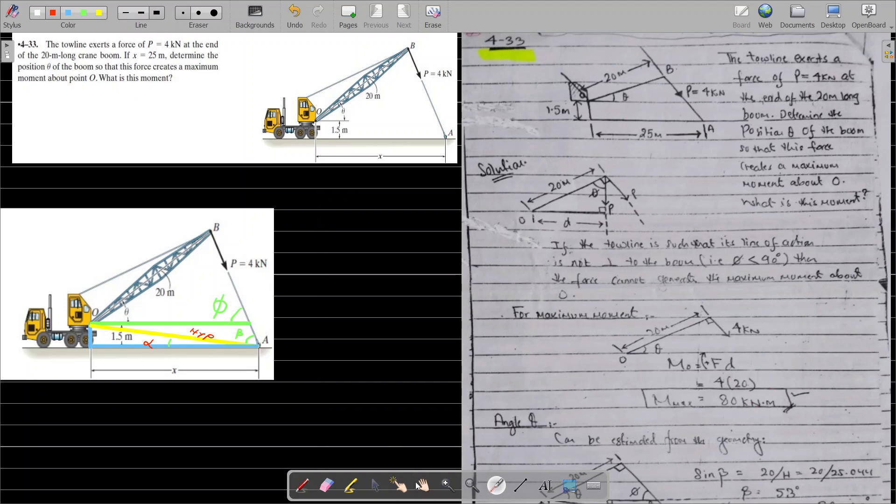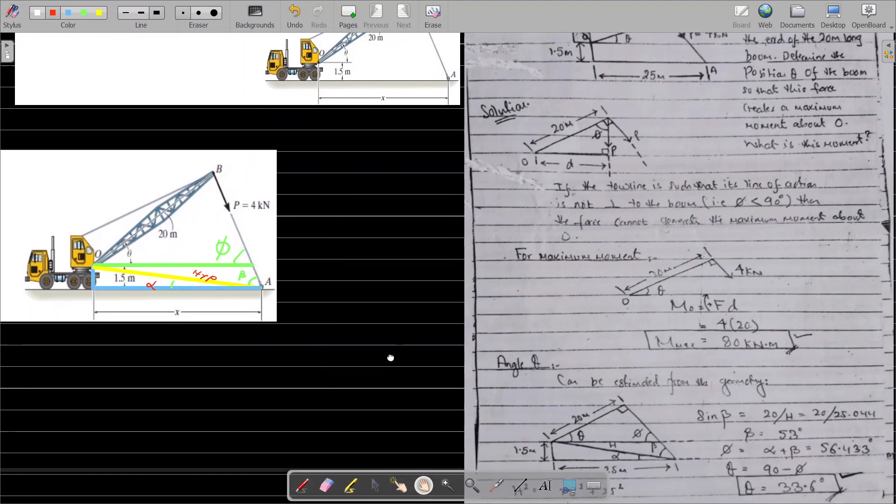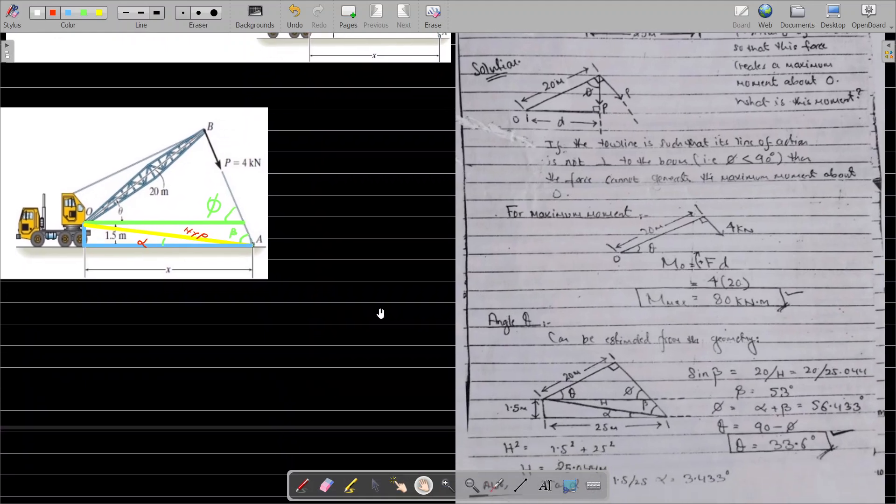For this calculation, we say this is our theta. From point O to point A, we draw the hypotenuse H. We also draw a straight line from O to the point where it meets at the 4 kilonewton green line, and we say the angle is phi.